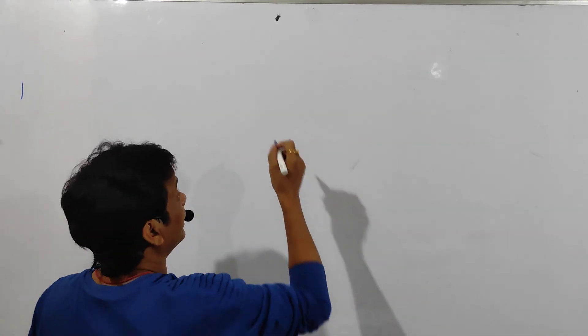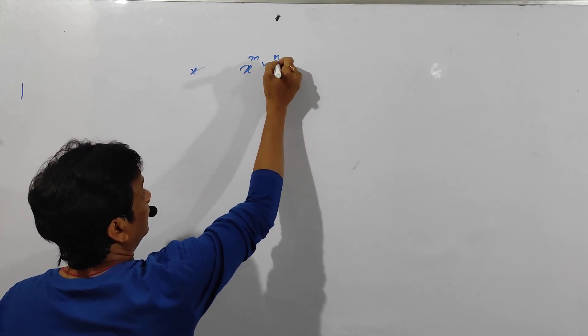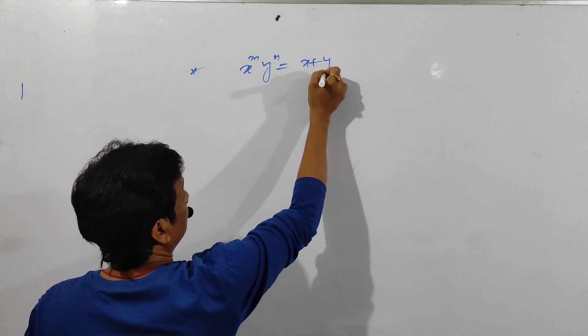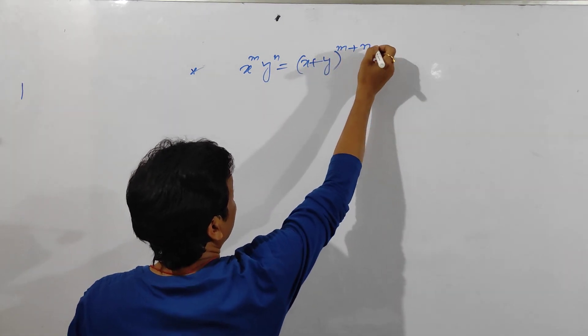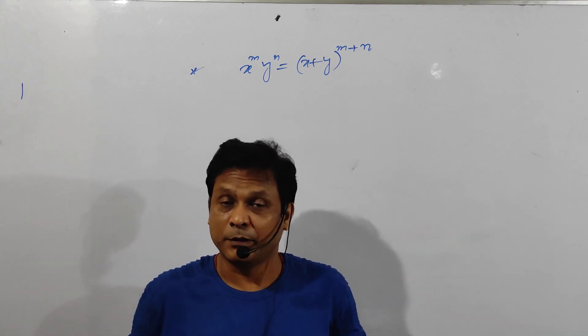So let us see how it becomes y by x. I am telling you one general formula: x to the n into y to the n is equal to x plus y. So let us find the derivative of this one by usual method, by your twelfth class method.